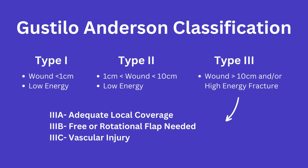For 3A open fractures, there will be enough soft tissue for local coverage of the wound. 3B will require a free or rotational flap for coverage. And finally, with 3C, these will involve vascular injury that needs to be repaired.